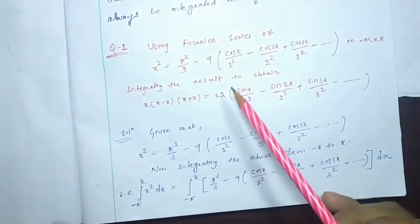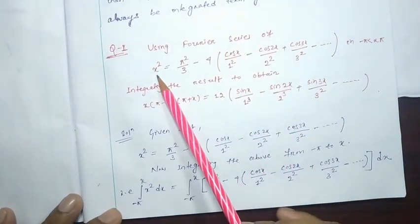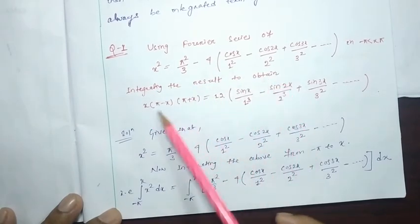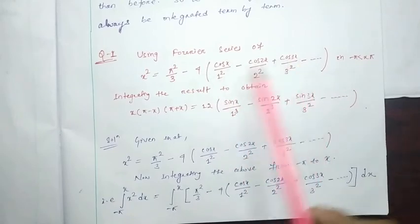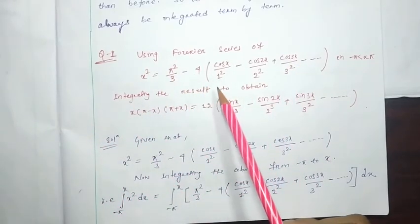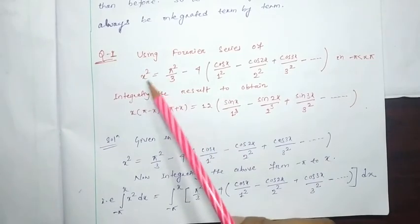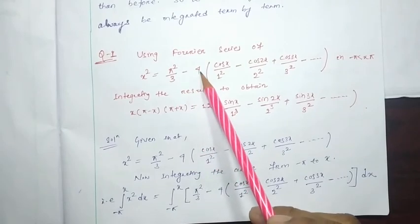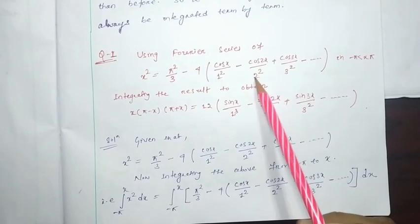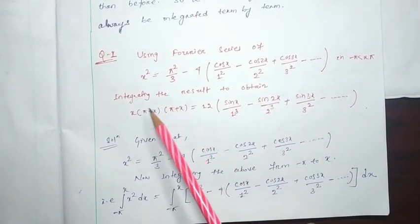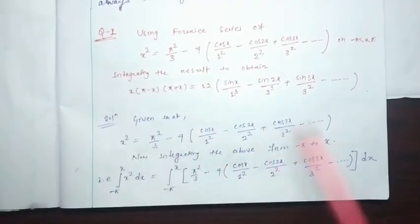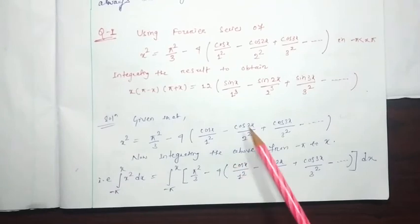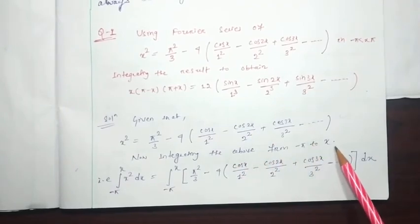We are going to do a problem using the Fourier series of x², integrating the result to obtain a new series identity. We have the Fourier series of x² in the interval minus pi to pi, already derived in our previous class: x² = π²/3 minus 4 times [cos(x)/1² minus cos(2x)/2² plus cos(3x)/3² and so on]. Now we have to integrate this series from minus pi to x.